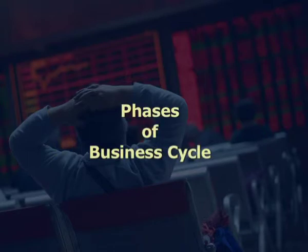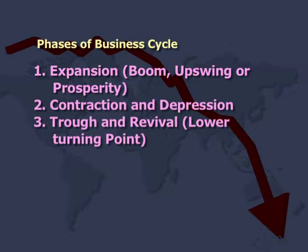Now let us have a look at the different phases of business cycle. There are three phases: expansion, contraction and depression, trough, and revival. Expansion, also known as boom, upswing, or prosperity — in this phase, people enjoy a high standard of living, prices increase for commodities, which does not negatively affect the population. As a result, there is an increase in employment and output of various goods. There is no involuntary unemployment, but frictional and structural unemployment prevail. There are zero gaps between potential GNP and actual GNP, and actual GNP finally has high production.